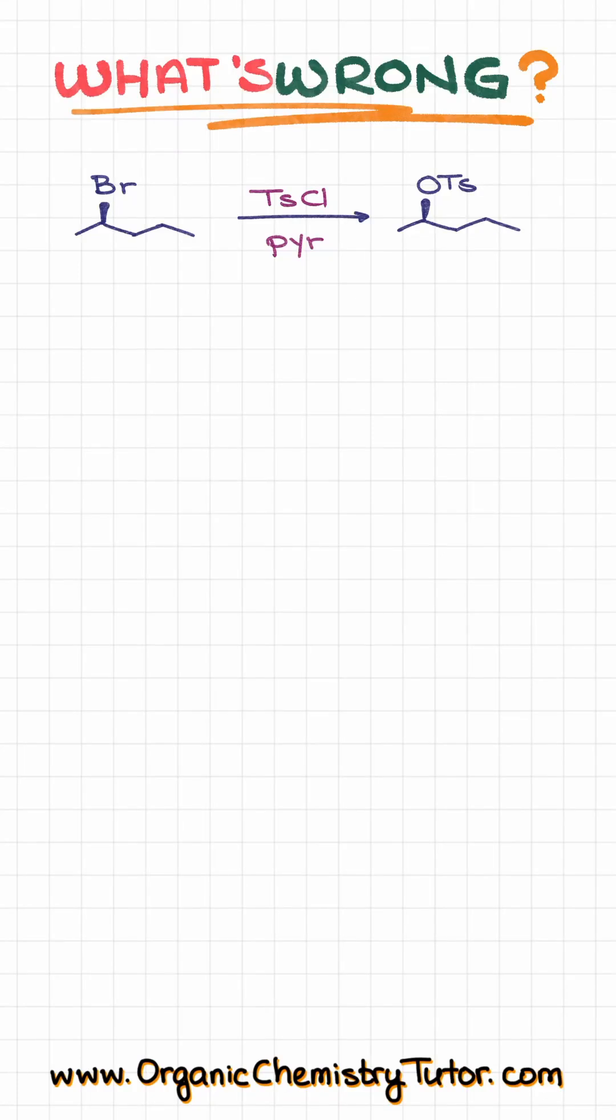Here is a fairly common mistake I see a lot of students make. We take one leaving group, which is the bromine in this case, and we replace it with another group, which is the tosylate. However, this is wrong, and this reaction is not going to work the way it is written.